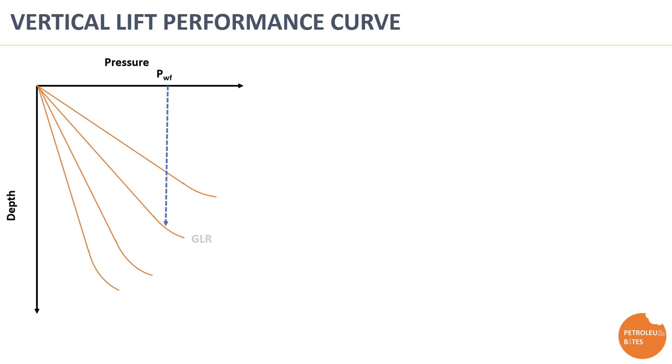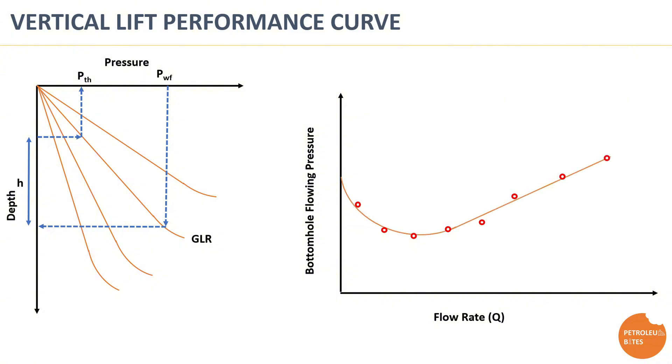On X axis, we select required bottom hole flowing pressure and move downwards vertically until the line intersects with the curve that has gas-liquid ratio value of produced fluid. Then move horizontally to intersect with Y axis. On Y axis, move upward as much as tubing vertical height, then return back again to the same gas-liquid ratio curve. After that move upward vertically to intersect with the X axis to get the wellhead flowing pressure. By applying the same concept at different rates, we can get a number of flowing rates at different bottom hole flowing pressures.